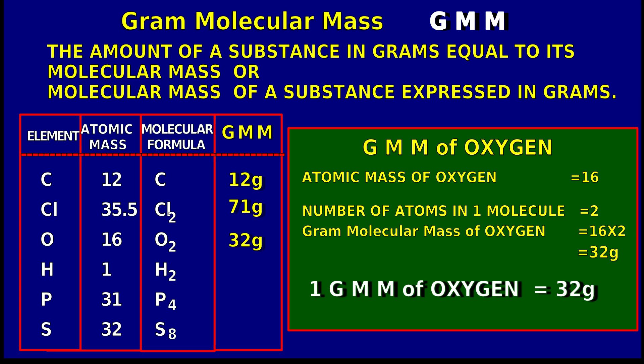To calculate the gram molecular mass of oxygen: one molecule of oxygen contains 2 atoms, and we can get the gram molecular mass by multiplying the gram atomic mass of oxygen with its number.